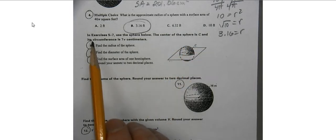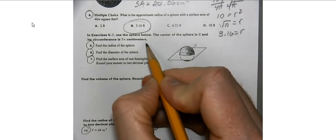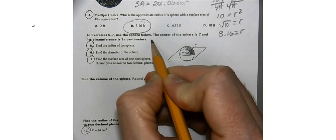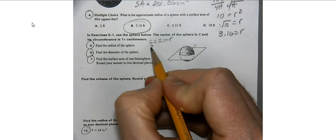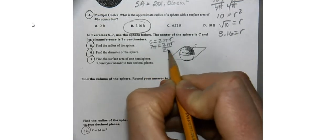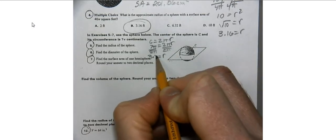We're going to use this sphere. The center is at point C and the circumference — the distance all the way around — is 7 pi. We're going to find the radius. The radius of the sphere is the same as the radius of the circle. The circumference equals 2 pi r; if it's 7 pi, we divide by 2 pi to get r equals 3.5. So the diameter is 7 centimeters.